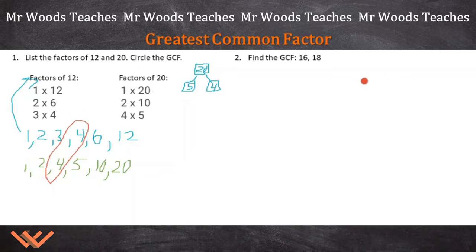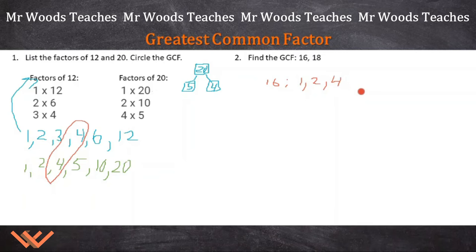Let's practice again with 16 and 18. If you know your multiplication tables, you can do this more quickly. For 16: 1, 2 — 3 is not because 3 times something does not make 16 — 4, 8, and 16. Because 1 times 16 is 16, 2 times 8, and 4 times 4.